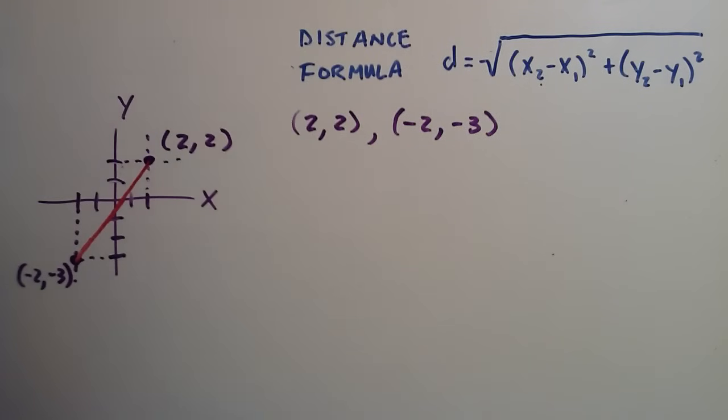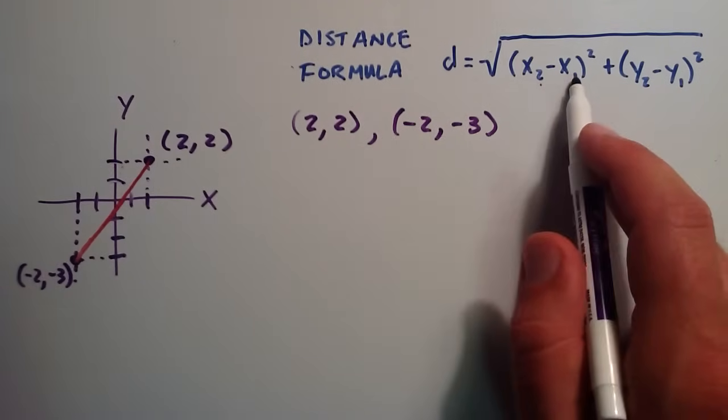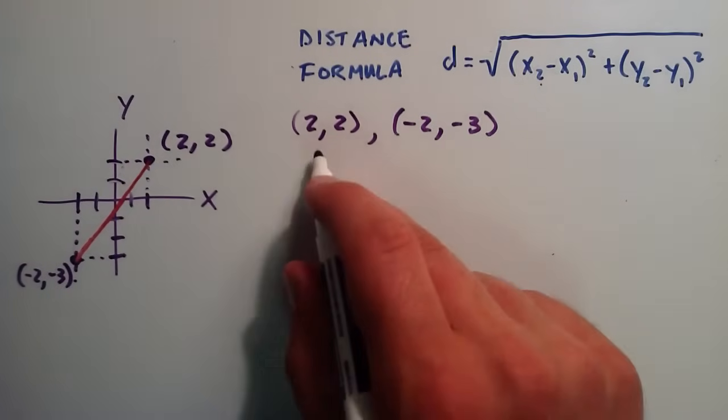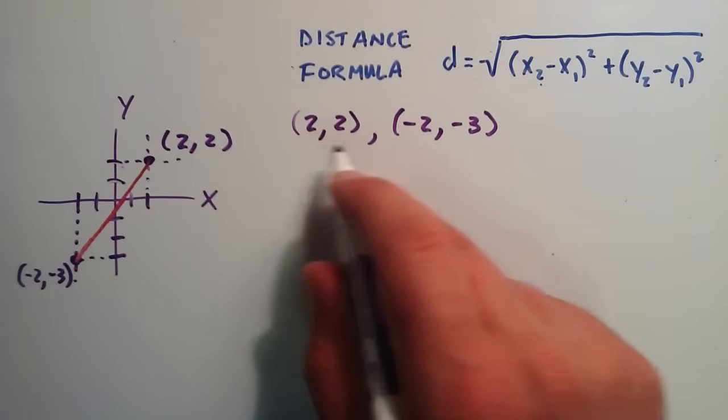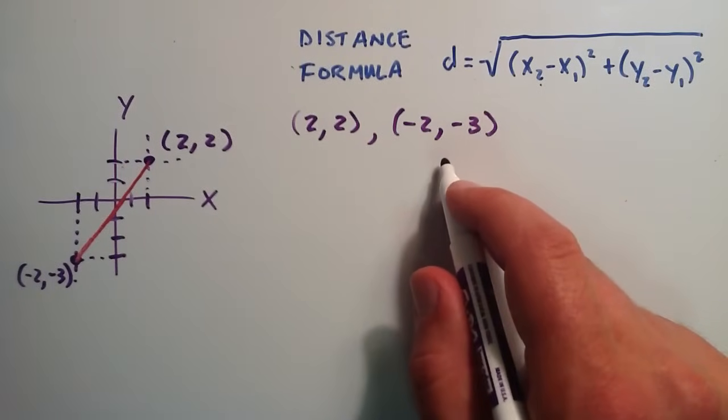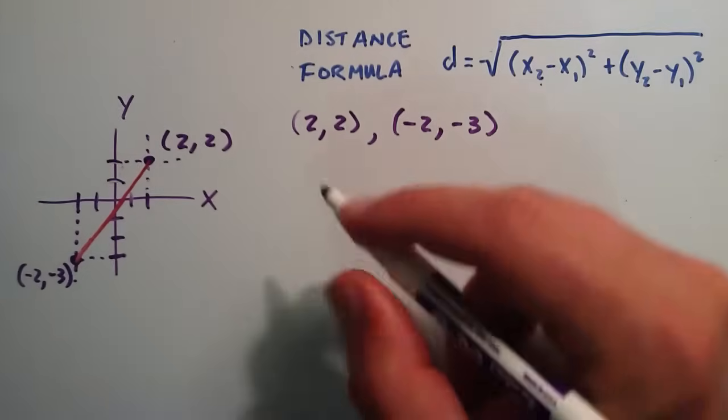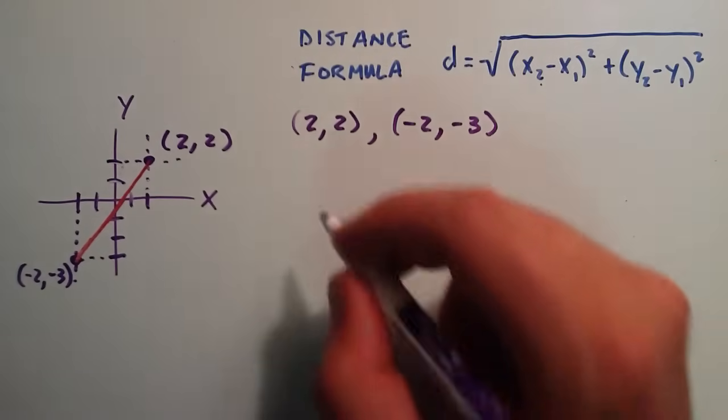So right now we just have some numbers in here. We don't have any x2, x1s, y2s, or y1s. So we're simply going to label one of these points x1, y1, and the other one x2, y2. And it doesn't matter which you choose to be which. If you plug them into the distance formula, you'll get the same answer.